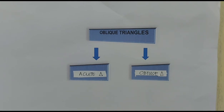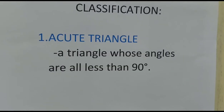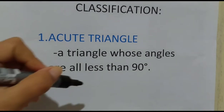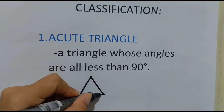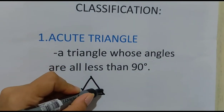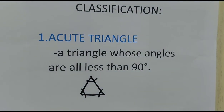Do you still remember what acute triangles are? Acute triangles are triangles whose angles are all less than 90 degrees. Here is an example of an acute triangle — all of its angles measure less than 90 degrees.